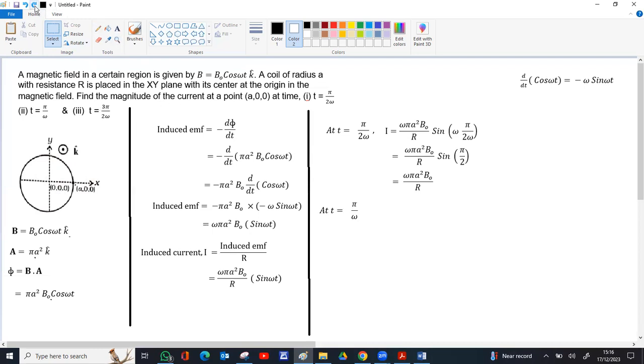Now case 2, at t equal to π by ω. So instead of t, just give π by ω. So you get sin ω into π by ω. Ω ω cancel, sin π. Sin 180 is 0. So the current also will be 0 at that instant.